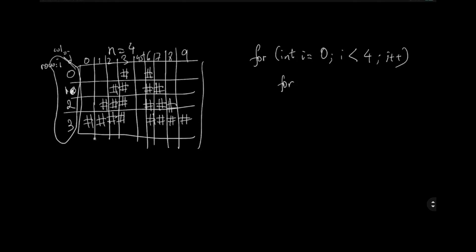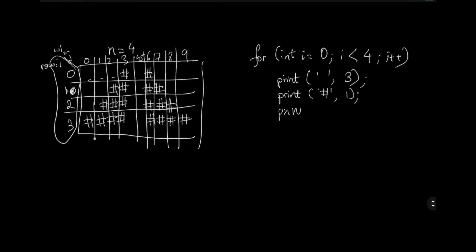And then we can say what we want — we want to print a bunch of spaces. How many spaces do we need? Well, we need to print three spaces. We want to print a space three times. We can define this function of our own. And then after that, we want to print a hash one time, and then we want to print two blank spaces, and then we want to print another hash. So this structure will create the first row.